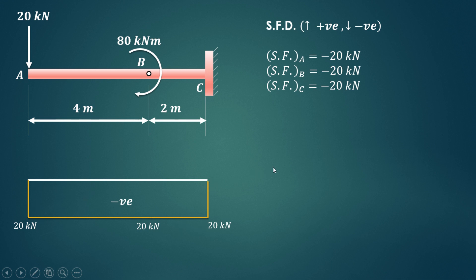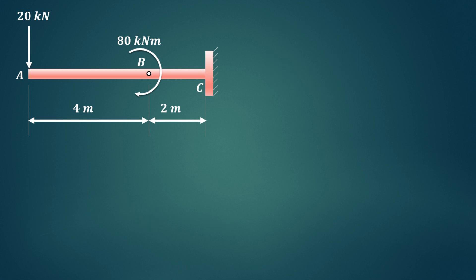Now we'll see how to draw the bending moment diagram. In this particular case the conventions that we have used for bending moment diagram are clockwise positive and anti-clockwise negative.